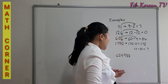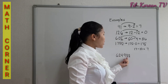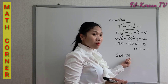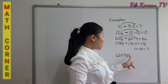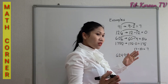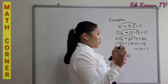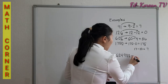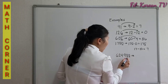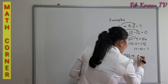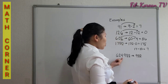For example, take the number 624,988. We will determine whether it is divisible by 7. We group it in blocks of 3 from right to left. The first group is 988, and the second group is 624.